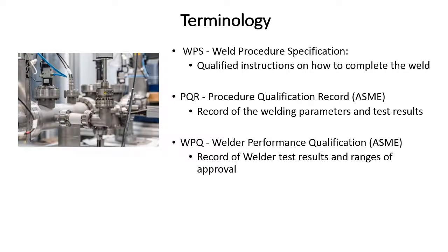A welding procedure specification is a qualified instruction on how to complete the weld — basically the recipe you give the welder. A PQR is a procedure qualification record. It's the record of the welding parameters and test results used to make a test plate where you did bend tests, tensile tests, and whatever other testing is needed to support your WPS. It's a written document that includes the lab test reports.